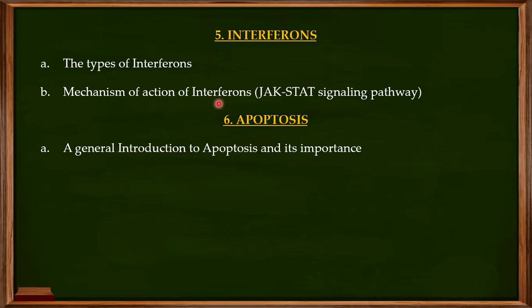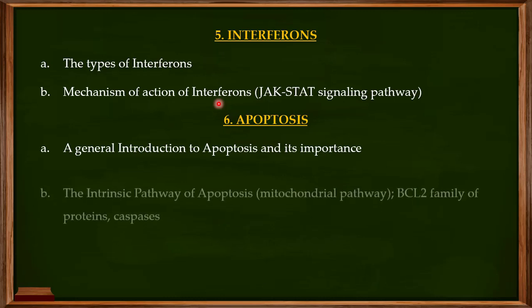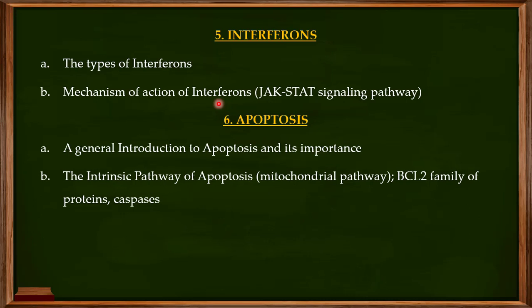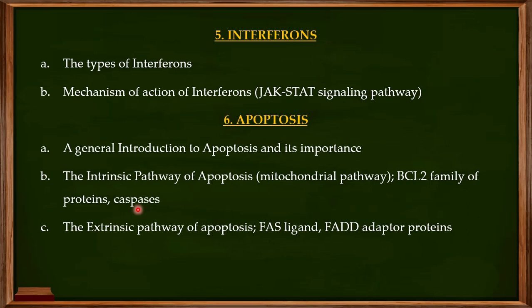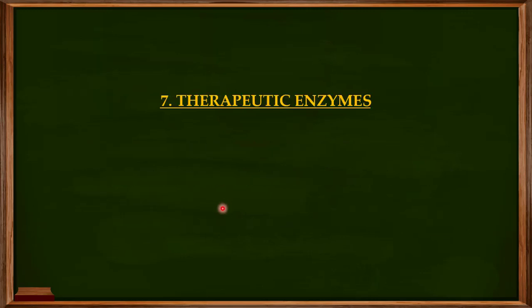Next, we'll focus on one of my favorite topics: apoptosis. We'll start with a general introduction to apoptosis and its importance in the normal physiological functions of living organisms. We'll then discuss the different pathways of apoptosis. The first is the intrinsic pathway, also known as the mitochondrial pathway, where we'll have a detailed discussion on the BCL2 family of proteins and caspases. We'll then cover the extrinsic pathway, focusing on the FAS ligand and the FADD adaptor protein, and the point at which the intrinsic and extrinsic pathways intersect.